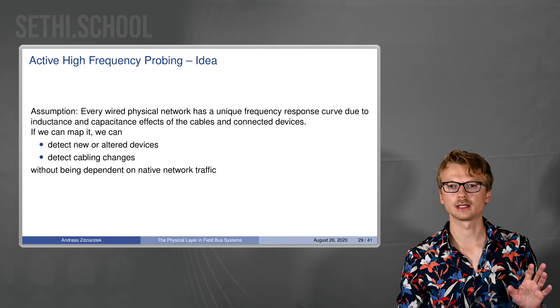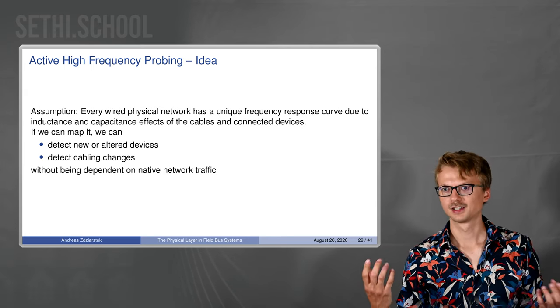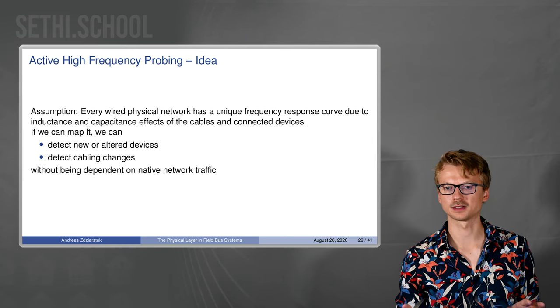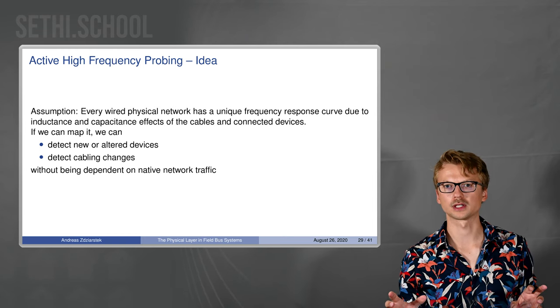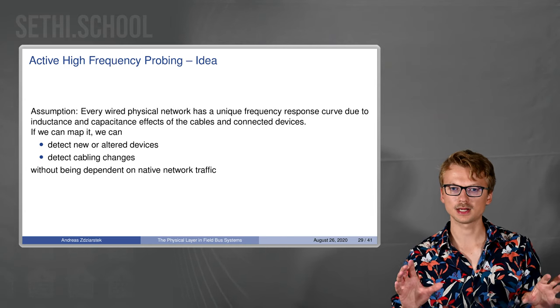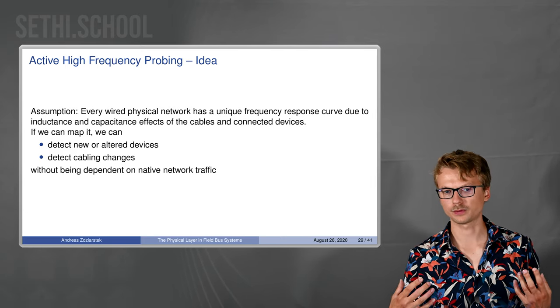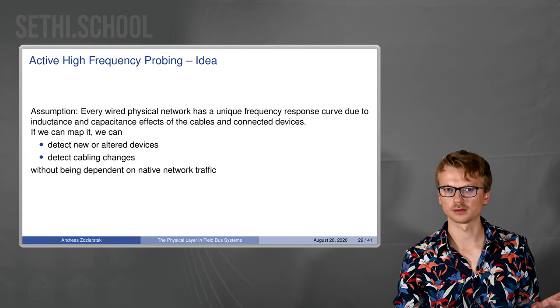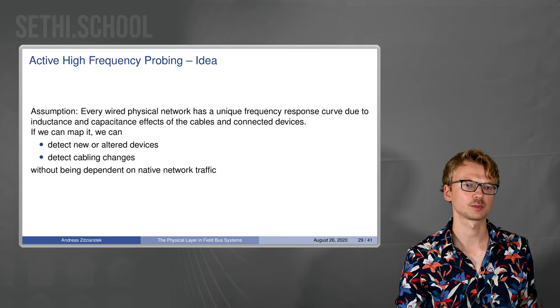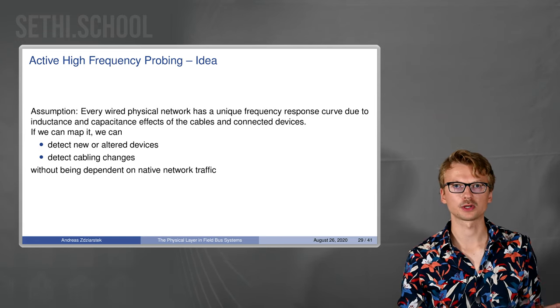For the active high frequency probing, going back to the idea, the assumption is that every wired physical network has a unique frequency response curve. Actually that also goes for wireless environment and pretty much anything. The reason in a wired network is that cables have inductance and capacitance, which is electronics stuff. You don't really need to know a lot about it apart from that it has an outsize effect on high frequency conductance of the cable. And inductance and capacitance vary across devices, cables, cable length etc. So what we thought is we can see that if anything in the network changes then it becomes another, then it gets another frequency response or a change in frequency response.